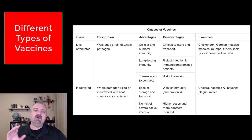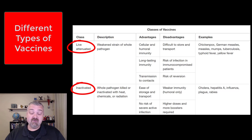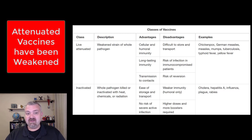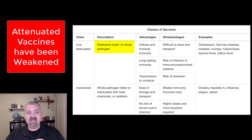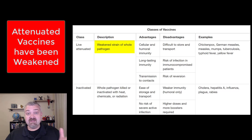We're going to start with the first two: live attenuated vaccines versus inactivated or killed vaccines. The term attenuated means weakened. These are living pathogenic organisms that have been weakened, either through genetic manipulation or by growing them in a culture they don't like until they weaken and have decreased virulence. They're less scary organisms, but they are living organisms.